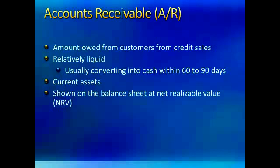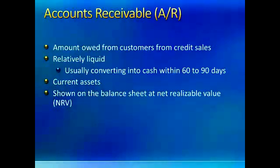In an ideal world, everyone would pay what they promised to pay. Unfortunately, we don't live in that ideal world, and sometimes customers promise to pay and fail to pay. If we reported Accounts Receivable at the total amount promised, we would be overstating our asset because that's not how much we will probably collect. Accounts Receivable is a probable future economic benefit, so we need to report it as the amount that we will probably collect.